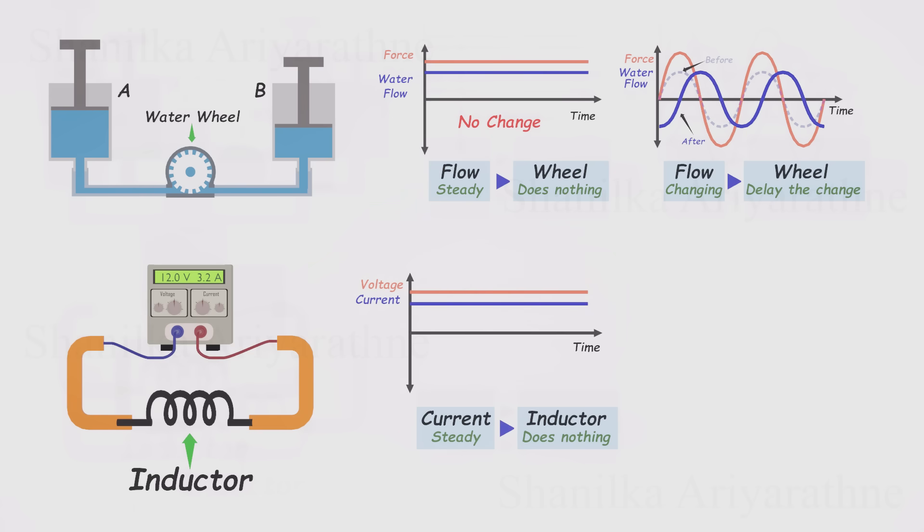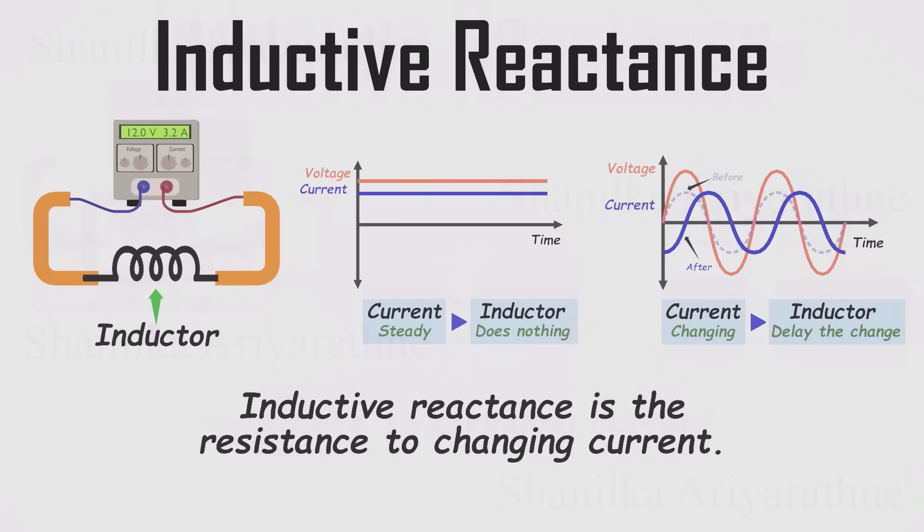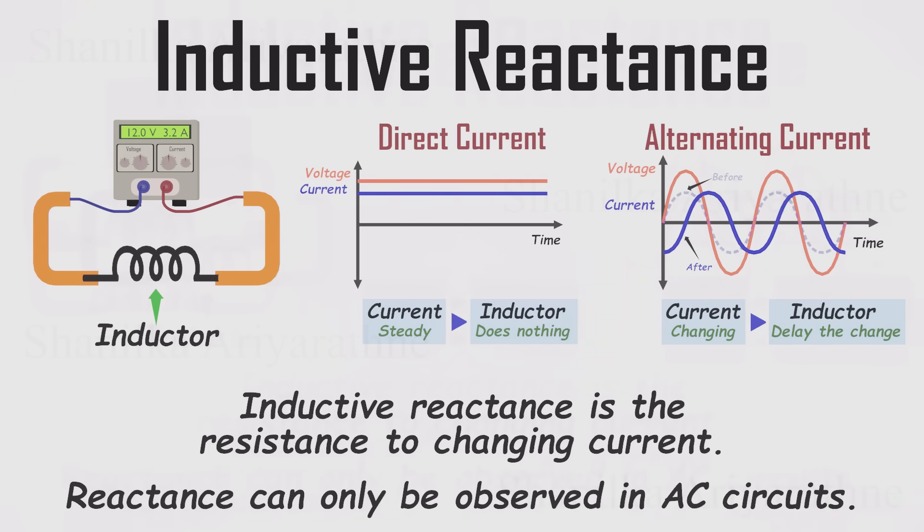And that's exactly how an inductor behaves in a circuit. When the current stays constant, the inductor just sits there quietly, acting like an ordinary piece of wire. But when the current tries to change, the inductor resists, causing the current to lag behind the voltage. The voltage across the inductor always leads the current. And this effect is called inductive reactance. And here's the key point. Inductive reactance doesn't appear in DC circuits because the current is constant. It only shows up when the current is changing, like in AC circuits, or when a switch is suddenly flipped.